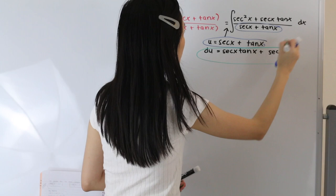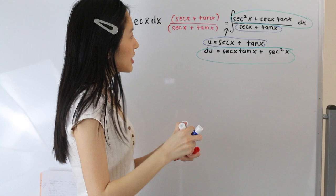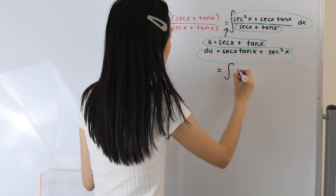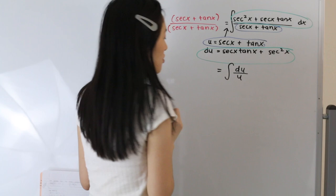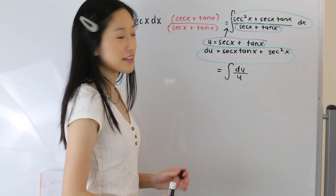So let's go ahead and rewrite this integral in terms of u. That leaves us with the integral of du over u. We can rewrite this integral as 1 over u du.